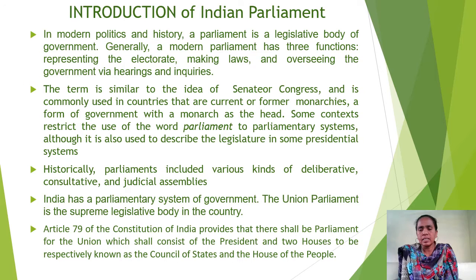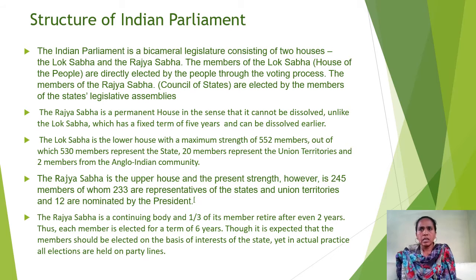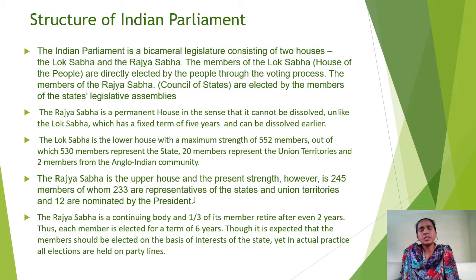Article 79 says that Indian Parliament consists of the President, Lok Sabha, and the Rajya Sabha. The Lok Sabha and the Rajya Sabha are known as the House of the People and Council of States respectively. The fathers of the Indian Constitution chose a bicameral legislature for Indian Parliament. As India is a federal state, at the central level the legislature is called Parliament, and at the state level they are called state legislatures. The founding fathers chose a bicameral legislature for Indian system of government.